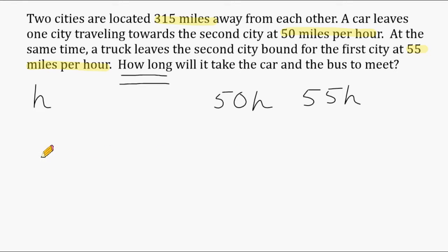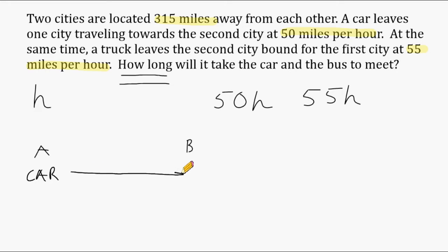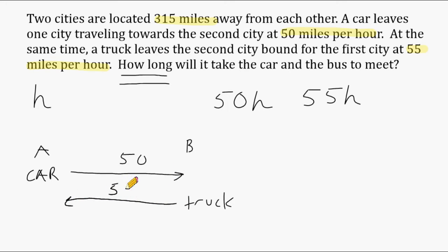Let's visualize this problem. There are two cities — call them City A and City B. From City A, the car is traveling towards City B at 50 miles per hour. Starting at City B, the truck is traveling towards City A at 55 miles per hour. The truck is traveling faster than the car, but at some point these two vehicles are going to meet up. It wouldn't be exactly half the distance because they're going different speeds. Because the truck is going faster, it's going to travel a greater distance before they meet.